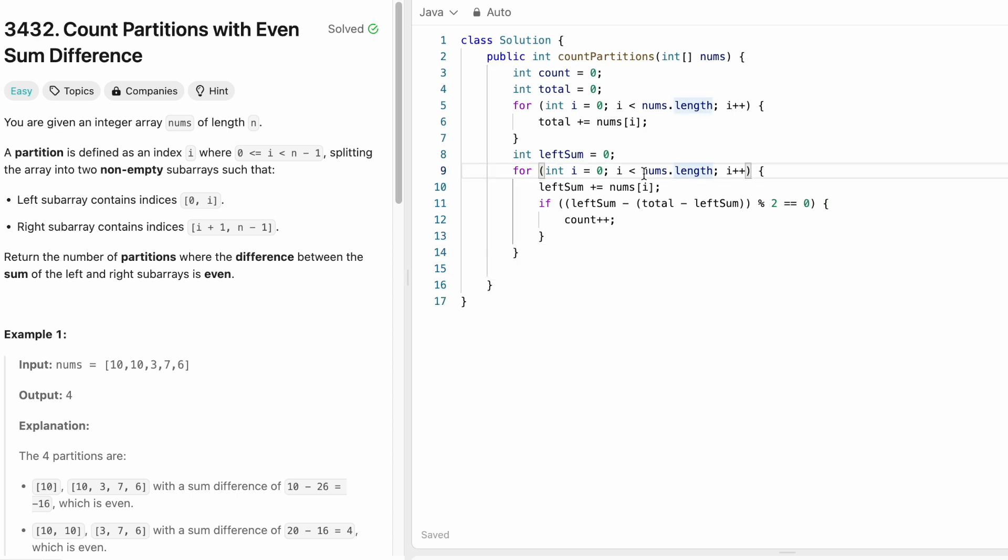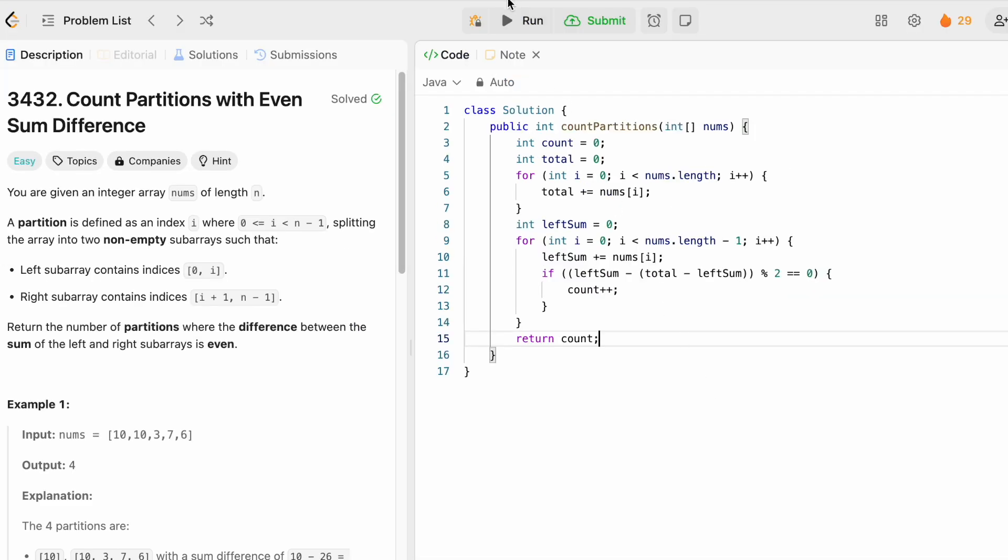And finally outside the for loop, and here we did one error. We don't have to go to nums.length. We have to go only to nums.length minus one because we need to leave one element to the right in the right subarray. Now outside this for loop, once you process all the elements, we have to return the variable count, which is our output. Now let's try to run the code.